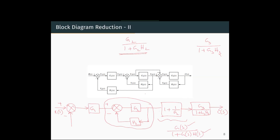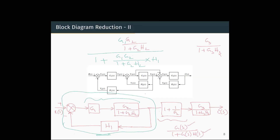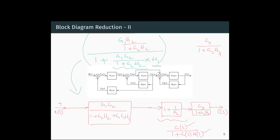Replacing that within this feedback loop, we now have two blocks in series, which we multiply. The forward loop becomes G1·G2 divided by 1 plus G2·H2, and the feedback element is H1. This is a negative feedback system, so applying the formula, G(S) is G1·G2 divided by (1 plus G2·H2) and H(S) is H1.